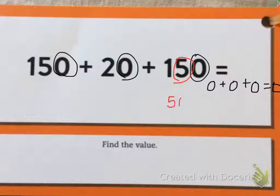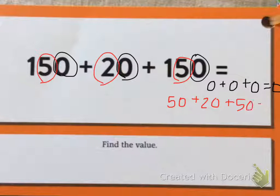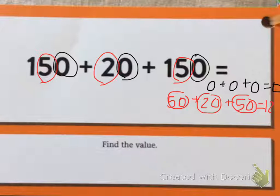50 plus 20 plus 50 equals, well, I know 50 and 50 is 100 plus 20 is 120. So the value in the tens place is 120.